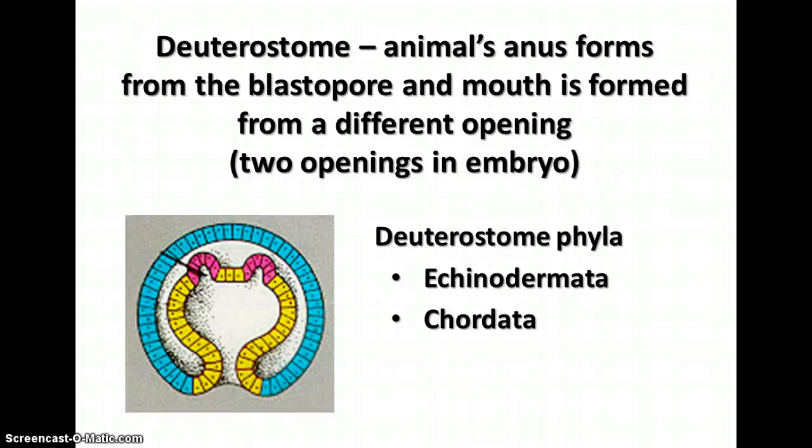In the deuterostomes, the animal's anus forms from the blastopore, and the mouth is formed from a different opening. There are two phyla in the deuterostomes: the echinoderms and the chordates. Again, we'll discuss each of these groups in turn.